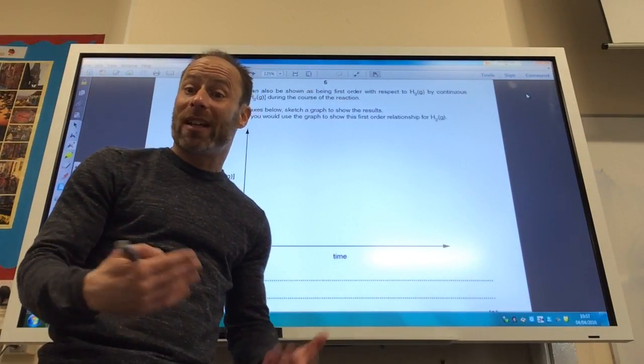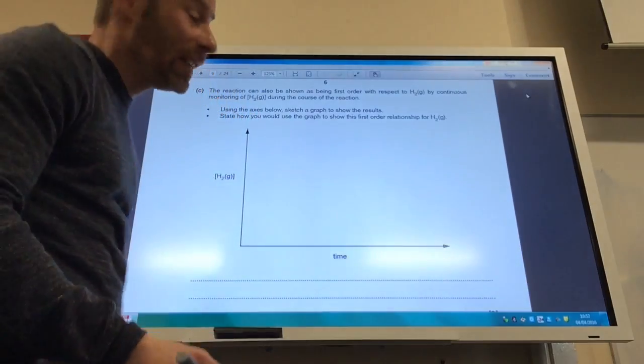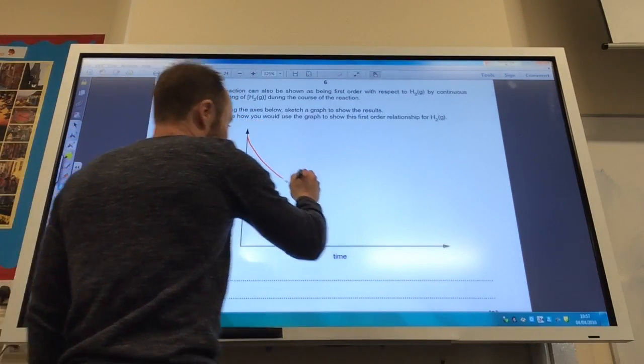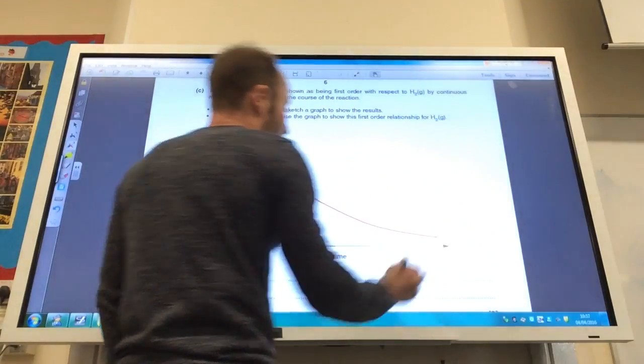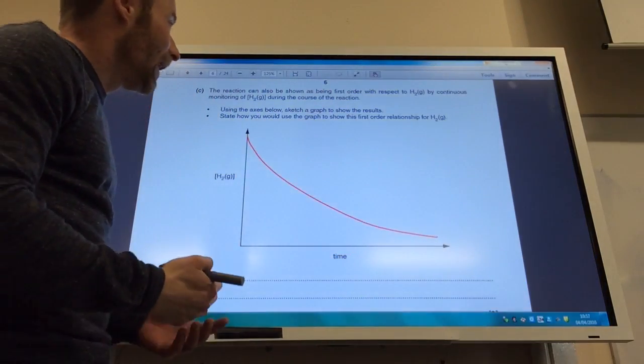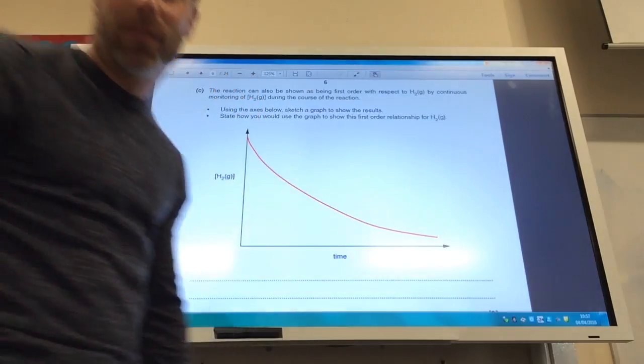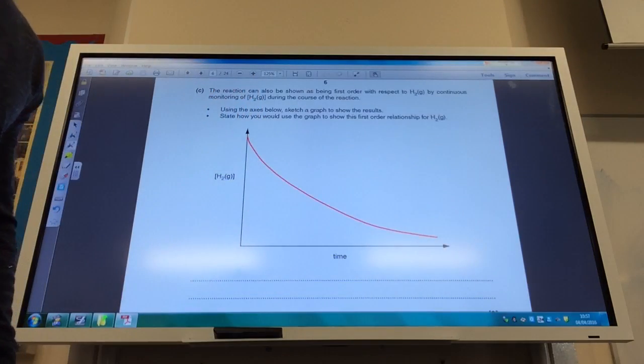Okay, so it's first order in concentration is going to have a constant half-life. So you need a nice curve going down like so. So nice smooth curve. And then how would you use it? You would see a constant half-life for a first order reaction.